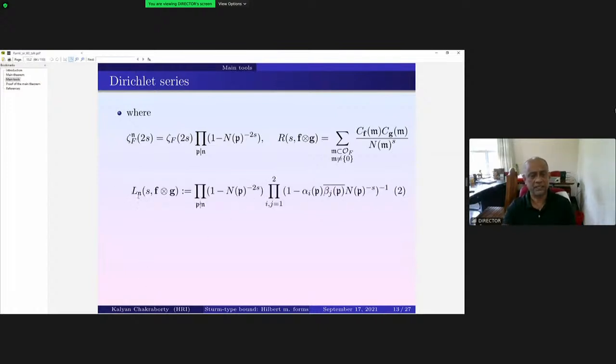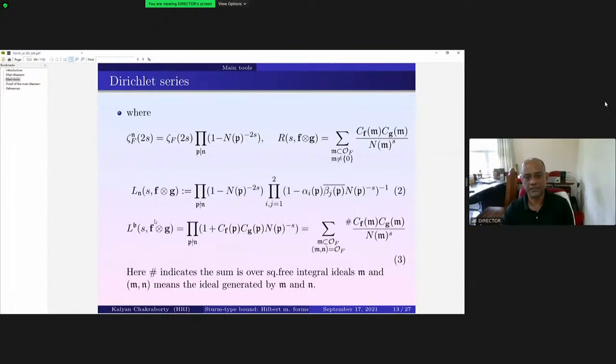So let's first look at this Dedekind zeta series L_n(s, f×g). This is equal to a product over all primes which do not divide that ideal n: (1 - N(p)^(-2s)), then (1 - alpha_ip beta_jp bar N(p)^(-s))^(-1). So this is L_n, the first Dedekind zeta series that we'll be interested in.